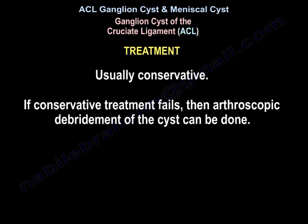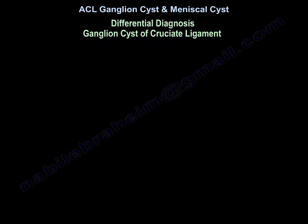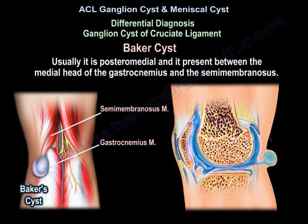Treatment is usually conservative, and if that fails, arthroscopic debridement of the cyst can be done. For the differential diagnosis of a torn medial meniscus, check medial joint line tenderness, McMurray test, and MRI findings. Another differential diagnosis is a Baker's cyst, which is usually posteromedial, present between the medial head of the gastrocnemius and semimembranosus.